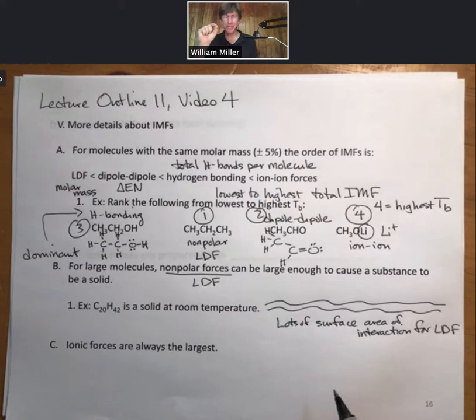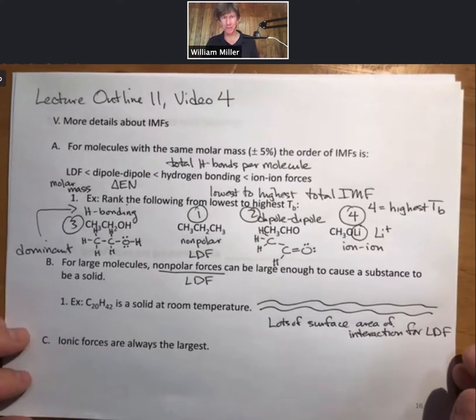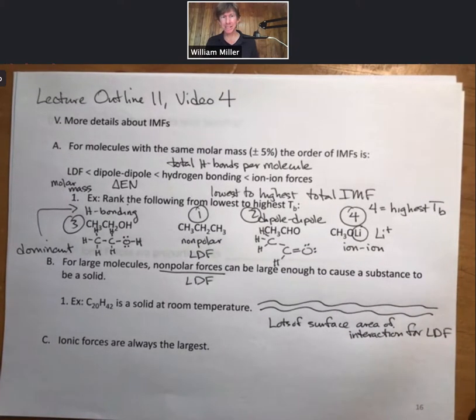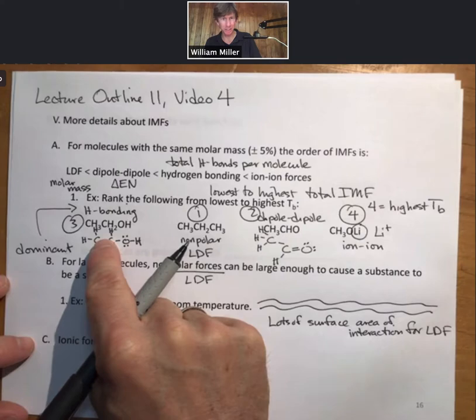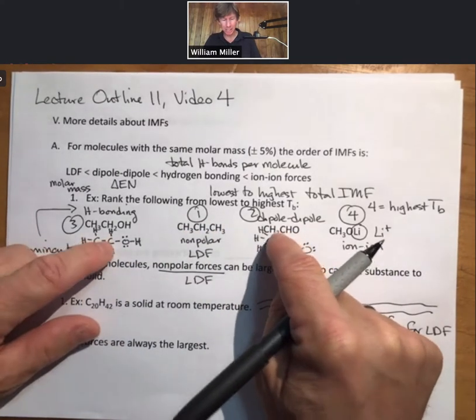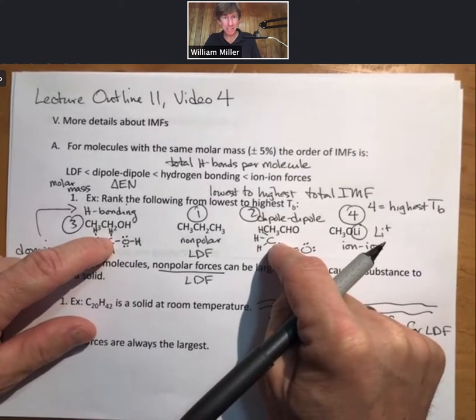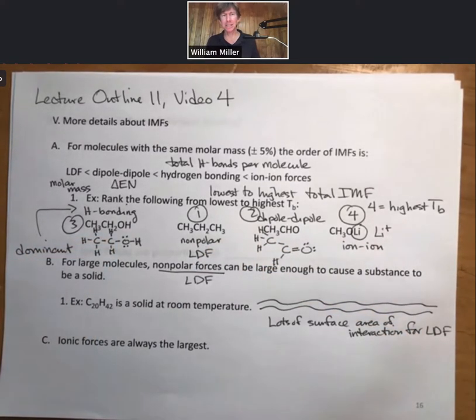For LDF, which leads to lots of LDF, and therefore, this is a solid at room temperature. On a per-instance basis, LDF is the weakest. But just like we saw with DNA and hydrogen bonds, get enough of them together, and you can turn nonpolar substances solid. Ionic forces are always the largest. Hands down, they have the biggest charges. Remember, hydrogen bonding is just a large version of dipole-dipole. These have partial charges, permanent. That's less than full permanent charges. And then nonpolar has random fluctuations leading to instantaneous dipoles. Those are the weakest.